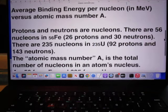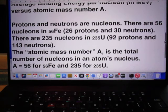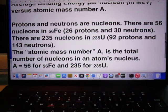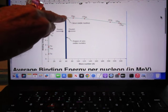Protons and neutrons are nucleons. There are 56 nucleons in iron-56, 26 protons, that's why it's iron, and 30 neutrons. There it is, iron-56.